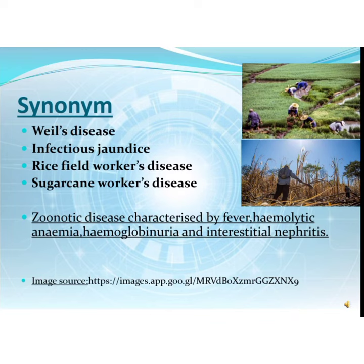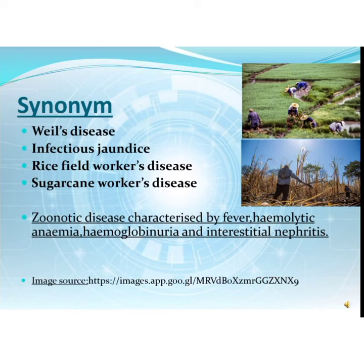Now coming to the first slide. Leptospirosis is a zoonotic disease characterized by fever, hemolytic anemia, hemoglobinuria, and interstitial nephritis. It is also an occupational disease likely to affect people working in environments prone to infestation with rodents, which are primary reservoir hosts of this disease. Leptospirosis is also known as Weil's disease, Infectious Jaundice, Rice field workers' disease, and Sugarcane workers' disease.